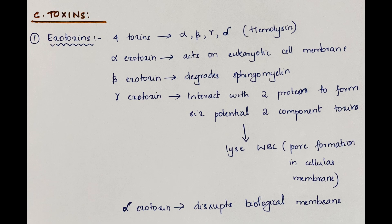Toxins. Exotoxins comprise four toxins: alpha, beta, gamma, delta, also called hemolysins. Alpha exotoxins are heterogeneous proteins that act on a broad spectrum of eukaryotic cell membranes. Beta exotoxins degrade sphingomyelin. Gamma exotoxins interact with two proteins to form six potential two-component toxins. All six toxins lyse white blood cells by pore formation in the cellular membrane that increases cation permeability. Delta exotoxin disrupts biological membranes.